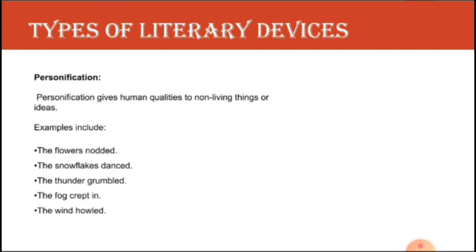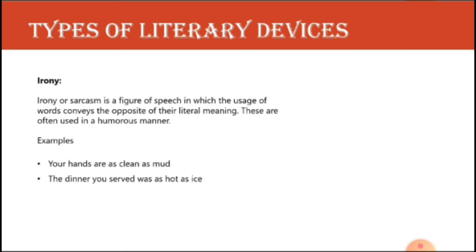The next one is personification. The word 'person' itself suggests its definition — personification gives human qualities to non-human or non-living things or ideas. For example, 'the flowers nodded' — nodding is a human quality, moving your head, and the writer gives it to flowers. 'The thunder grumbled' — grumbling is a human quality given to a non-living thing. This is personification.